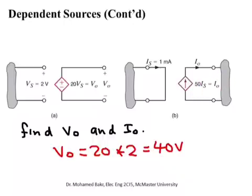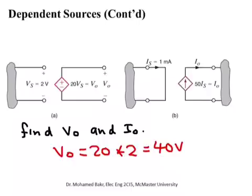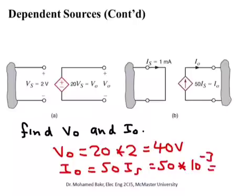For a current controlled current source example: the output current i_out equals 50 times the controlling current i_s, which is 1 milliampere. So i_out equals 50 times 1 milliampere, giving 50 milliamperes. This is very similar to a bipolar junction transistor, where a small base current controls a much larger collector current.